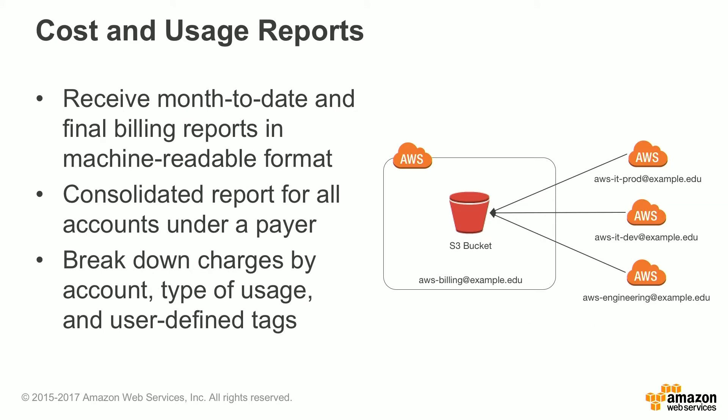Cost and usage reports: you can receive month-to-date and final billing reports in a machine-readable format using the Cost and Usage reports. You can get consolidated reports for all accounts under a payer using these reports. You can break down charges by things like AWS account, type of usage, and user-defined tags — so you get really granular billing information to be able to do a proper chargeback.